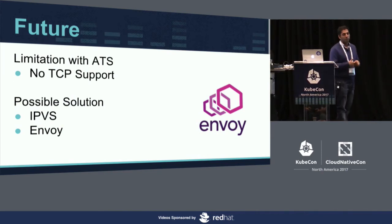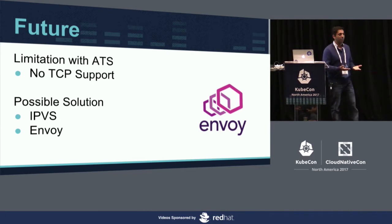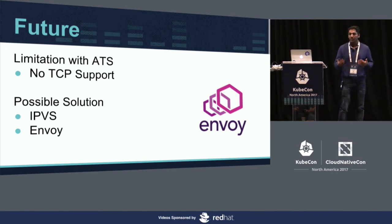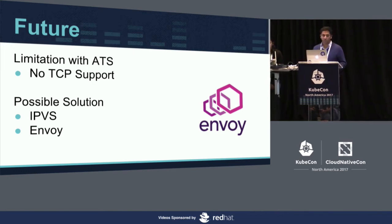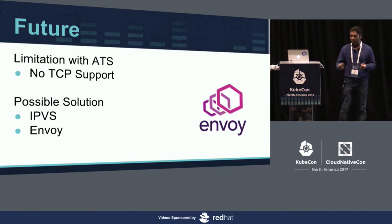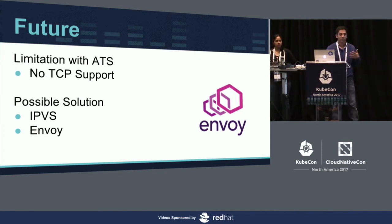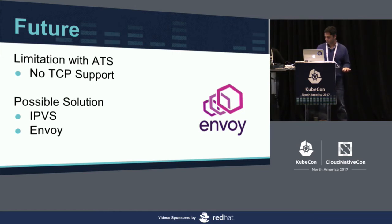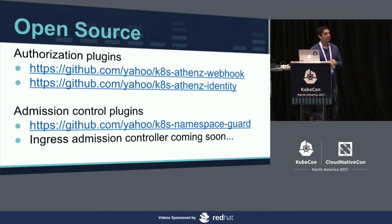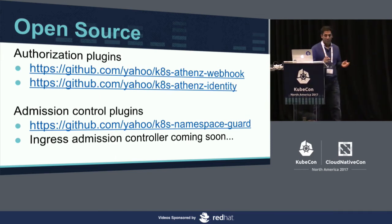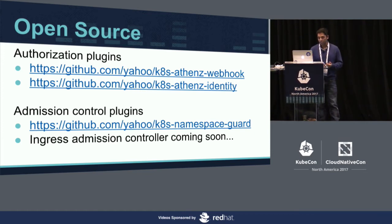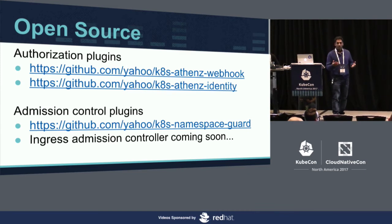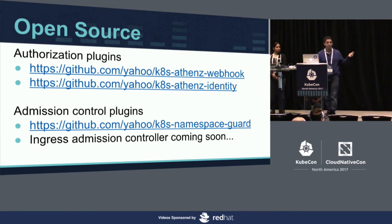Apache Traffic Server is very great, and we use it for HTTP-based use cases. However, there are some limitations — there's no TCP support. We have use cases where we want TCP support for Redis or other protocols like gRPC. We're looking at alternatives such as IPVS or Nginx for those use cases, and in the future we'll share our experience supporting both HTTP and TCP workloads. Components like the webhook, ATHN, and the dynamic admission controller are available in our open-source repo, and we are in the process of open-sourcing the Ingress Claim Service controller.